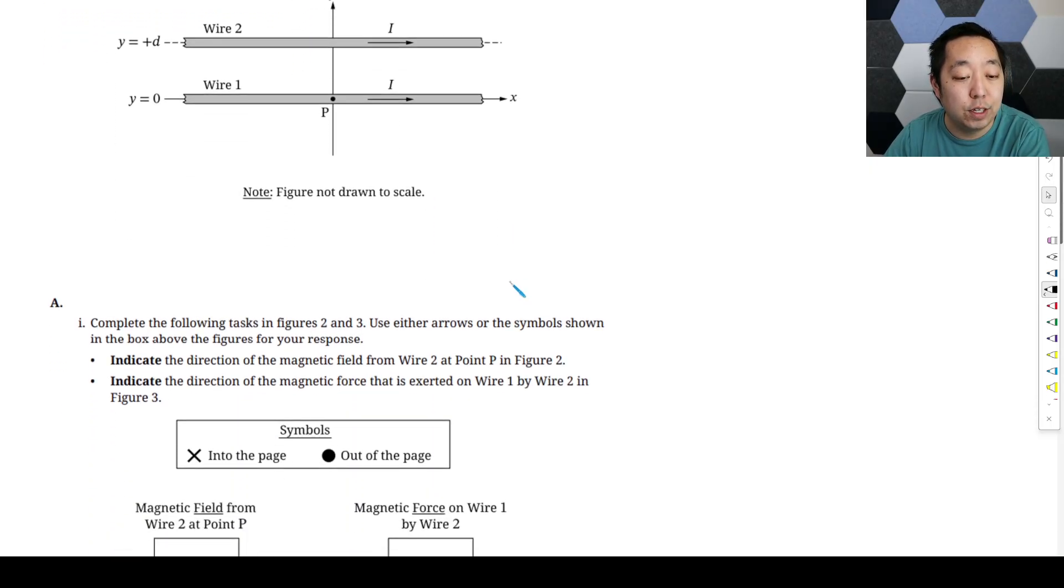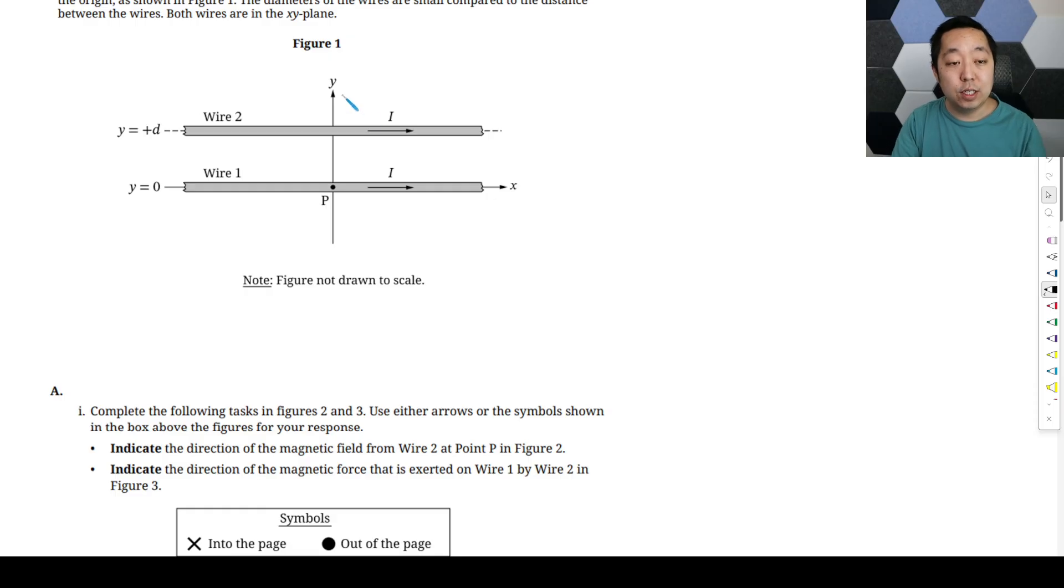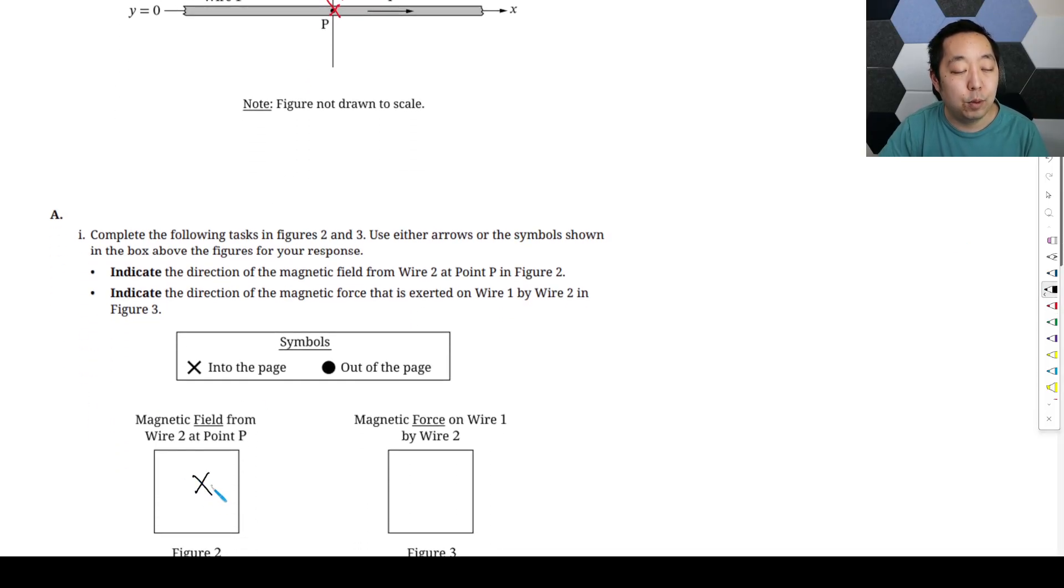Complete the following tasks: indicate the direction of the magnetic field from wire 2. So wire 2 is going to create a magnetic field. We use our right hand rule. Our thumb is going to be pointing to the right. My fingers will curl over the top of this, go into the page here. Then on the back side, my fingers would curl like this and come out of the page there. So the magnetic field is going to be going into the page there, so I would put an X at that point.